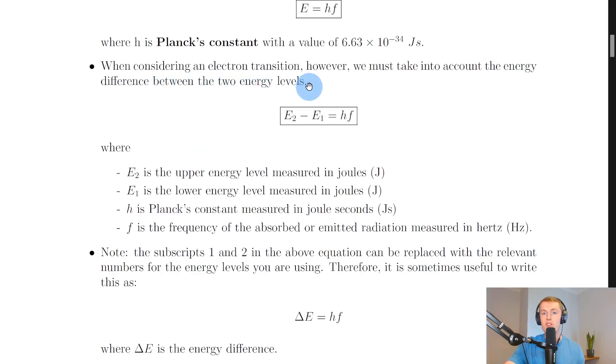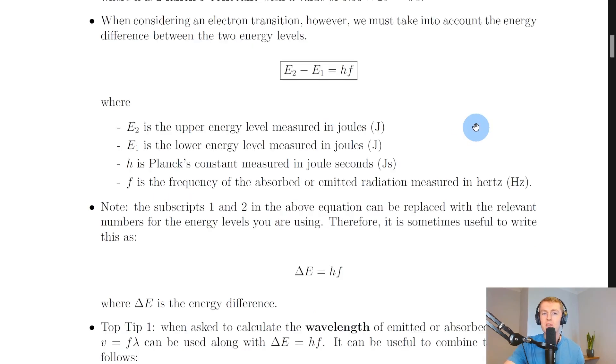When considering an electron transition however we must take into account the energy difference between the two energy levels. So instead of just E equals hf we can expand on the left hand side to make it E2 minus E1 equals hf. Where E2 is the upper energy level measured in joules, E1 is the lower energy level measured in joules, h is Planck's constant measured in joule seconds, and f is the frequency of the absorbed or emitted radiation measured in hertz.